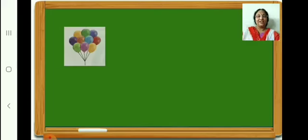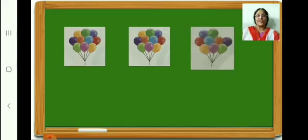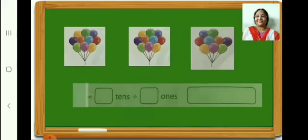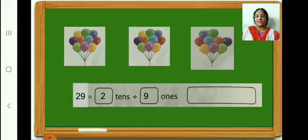Here, how many balloons? 10. In this bunch, how many? 10. In the third box, how many? 9. So in all, we have 29 balloons. 29 is equal to 2 tens plus 9 ones. Write it down, then write number name 29 in the given box. Very good. Now go on to the next page — page number 89.